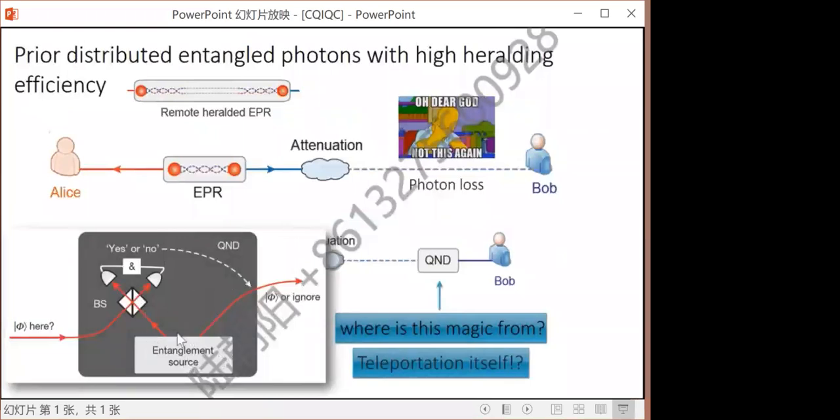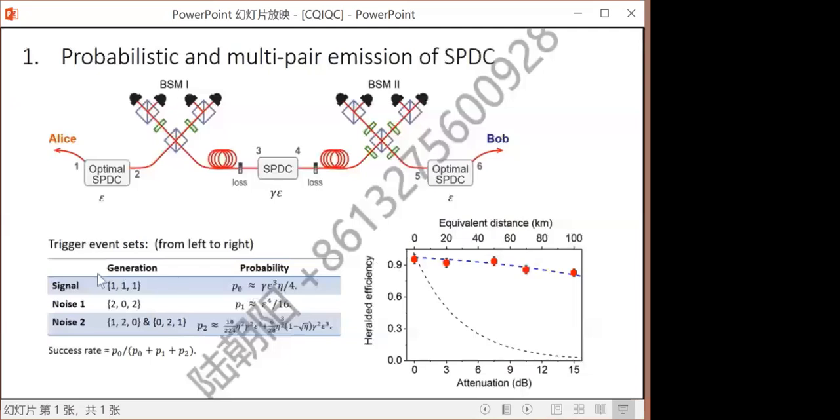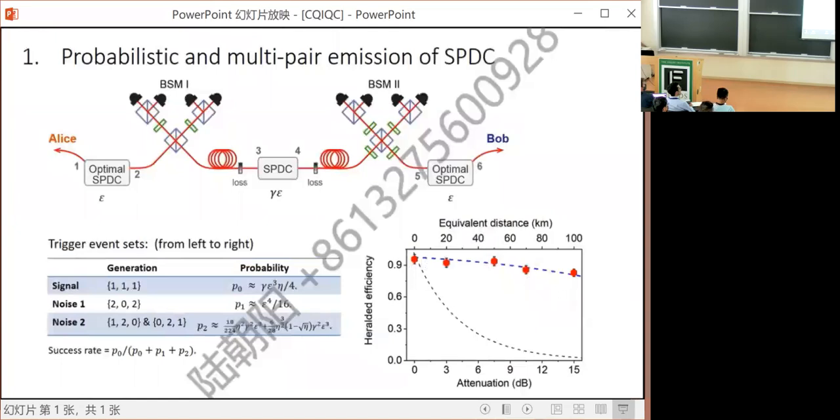Here we assume ideal entangled pairs, but SPDC is not a perfect entanglement source, it's probabilistic, meaning there's a probability P of emitting one pair, and half of P squared emitting two pairs. So there can be unwanted terms adding up to the desired terms, where each SPDC emits one pair. Fortunately, we can list all these signal and noise terms, and by doing some mathematics, we can suppress the noise by decreasing the brightness of the second pair, and we have an optimal success rate. When the equivalent distance is about 100 kilometers, we still have about 80 percent heralding efficiency. That is the first problem.